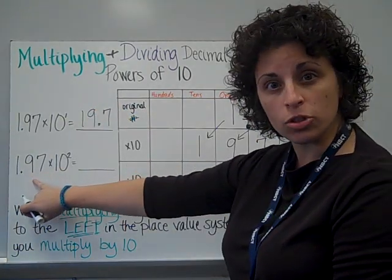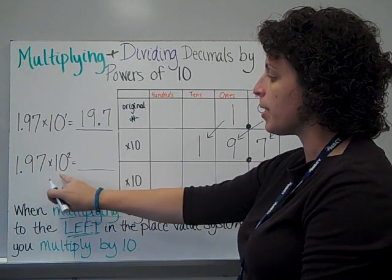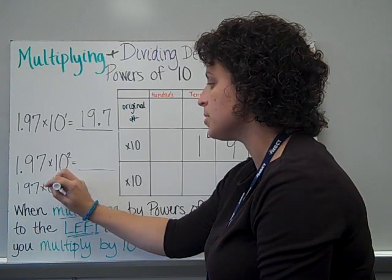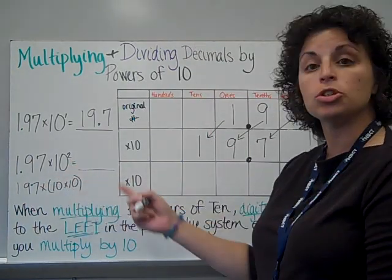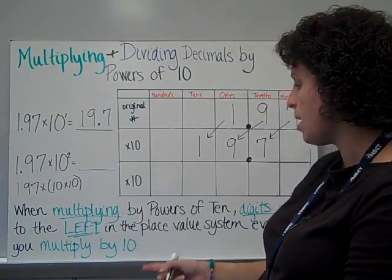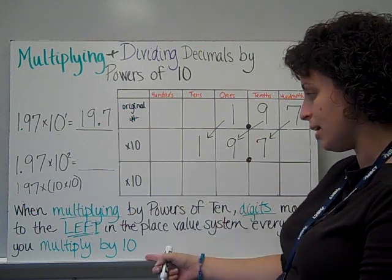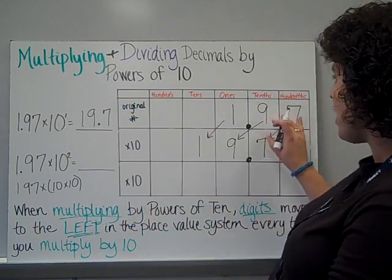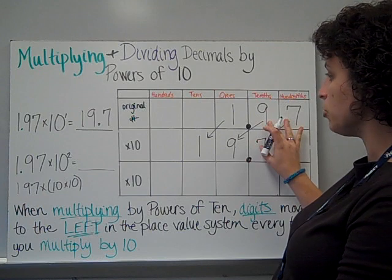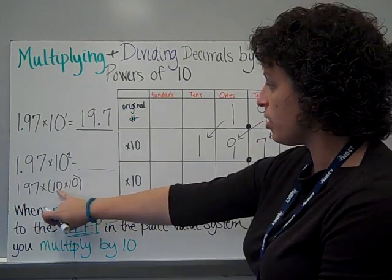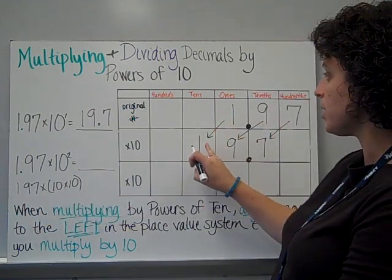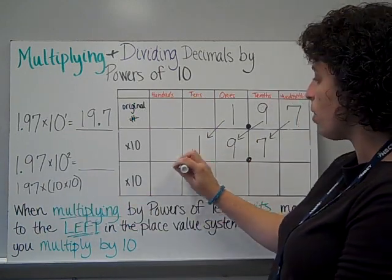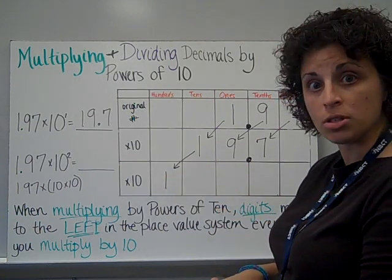Now if we start with our same original number, but this time multiplied by 10 squared, that is the same as 1 and 97 hundredths times 10 times 10. So there are two tens this time, and every time we multiply by a 10, the digits move to the left for each 10. Back to my original number, 1 and 97 hundredths — if I multiply by the first 10, it moves the 1 from the ones place to the tens place. Then if I multiply by the second 10, it's going to move that 1 even farther over to the hundreds place.